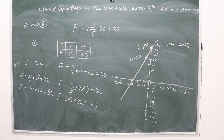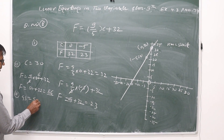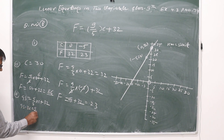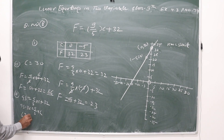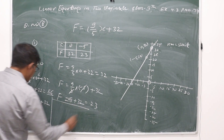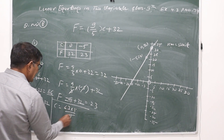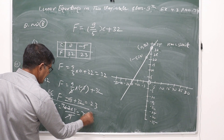Part three: if the temperature is 95 degrees Fahrenheit, what is the temperature in Celsius? Put F = 95: 95 = 9/5 × C + 32. So 95 - 32 = 9/5 × C, giving 63 = 9/5 × C. Therefore C = 63 × 5/9 = 35 degrees Celsius.